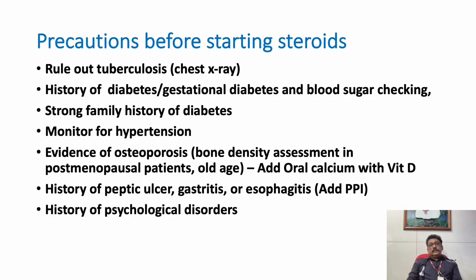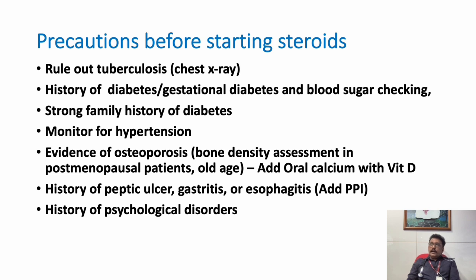Whenever we start steroids for a longer period — like in rheumatoid arthritis or SLE — we have to always rule out tuberculosis with a chest X-ray. Diabetes should be ruled out before starting steroids, and family history should be taken for both diabetes and hypertension. Patients can have high BP after starting steroids because of its water and salt retention activity.